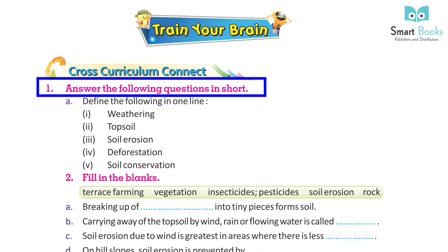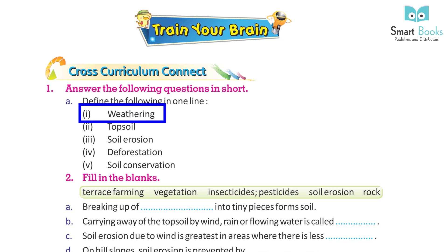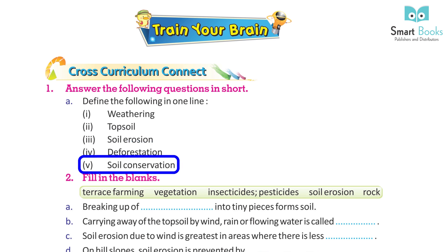Answer the following questions in short. Define the following in one line: 1. Weathering, 2. Topsoil, 3. Soil erosion, 4. Deforestation, 5. Soil conservation.